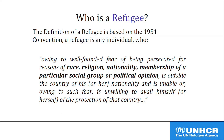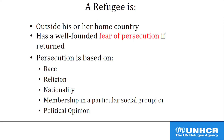A refugee is someone who, because of a well-founded fear of being persecuted for reasons of race, religion, nationality, membership in a particular social group, or political opinion, is outside the country of his or her nationality and is unable or unwilling to avail himself of the protection of that country. So first, the person has to be outside the country of his or her citizenship, and second, he or she has to have a well-founded fear of persecution if returned to that country. The persecution has to be based on one of five specific grounds.